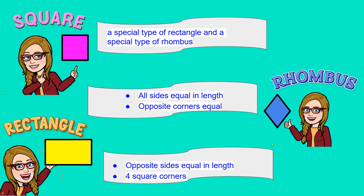First, we have a square. A square is a special type of rectangle and a special type of rhombus. So let's look at a rhombus and a rectangle to see why. A rhombus is a polygon that has four sides and four vertices — all sides are equal in length, but the opposite corners are equal. A rectangle is another type of quadrilateral which has four sides and four vertices, but in this case opposite sides are equal in length and they have four square corners. So a square is a special type of rectangle because it has opposite sides equal in length and four square corners, but it's also a special rhombus because all sides are equal and the opposite corners are equal. So it's kind of a mix of both.